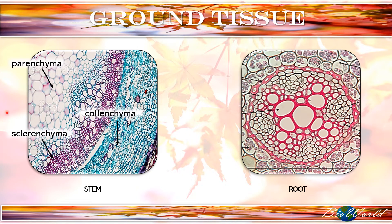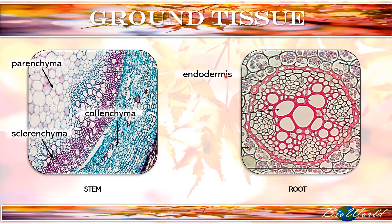These cells are not specific to the stem. You can also find parenchyma, sclerenchyma and collenchyma in the root. For example, these large cells here are parenchyma cells. However, this layer here is the endodermis, and over here which is the pericycle layer are specific to the root cells.